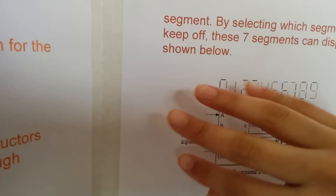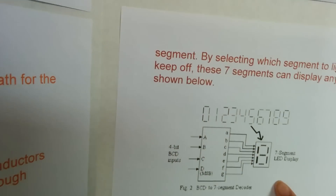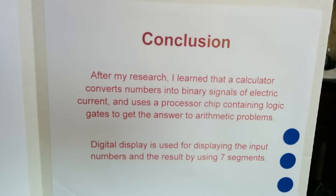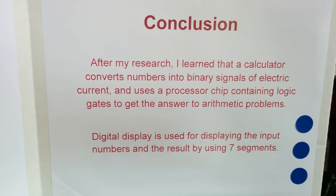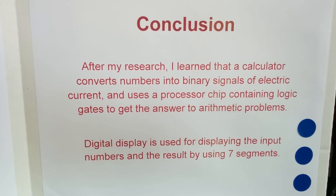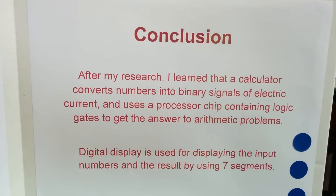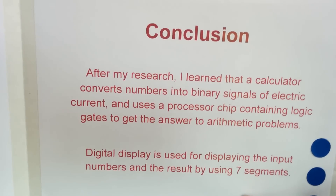And here's how it gets converted into a number. For my conclusion, after my research, I learned that a calculator converts numbers into binary signals of electric current, and uses a processor chip containing logic gates to get the answer to arithmetic problems. I also learned that a digital display is used for displaying the input numbers and the result by using seven segments.